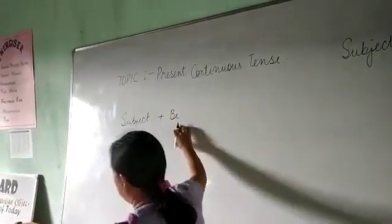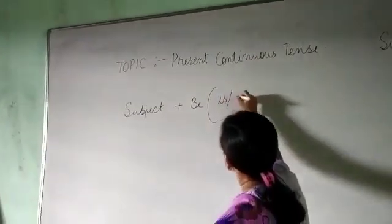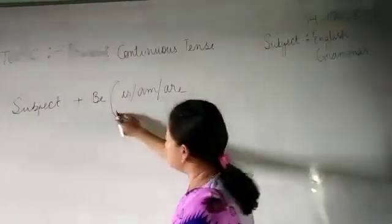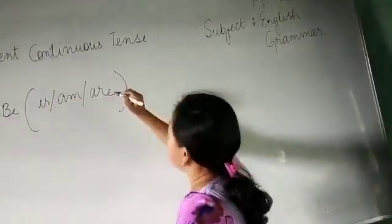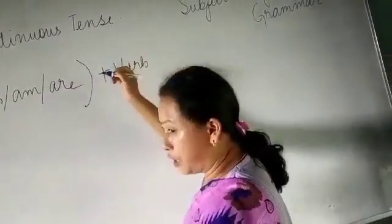What are the verbs included under this be verb? Is and are. These are the be verbs. And then after this be verb, there will be the verb given in the first form of the verb.